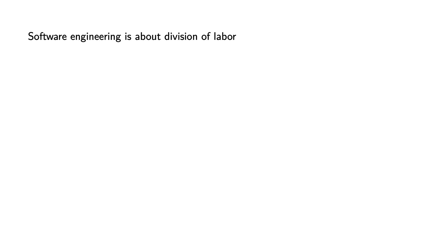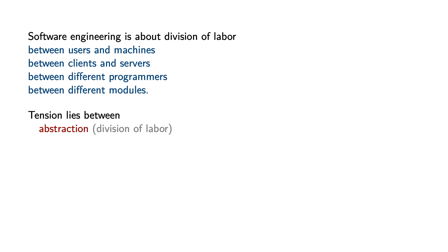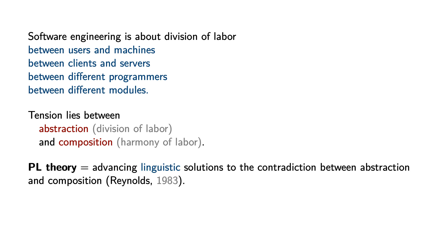Software engineering is about the division of labor: between users and machines, between clients and servers, between different programmers, and between different modules. Tension lies between abstraction, which embodies the division of labor, and composition, which embodies the harmony of labor. PL theory as a discipline is a particular approach to deal with this tension. In PL theory, we advance linguistic solutions to the contradiction between abstraction and composition.